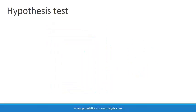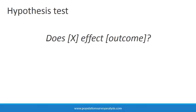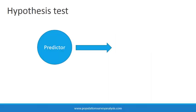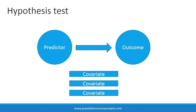Another common form of research question is a hypothesis test. Hypothesis test questions are formatted: does X affect outcome? For example, does having comprehensive HIV knowledge reduce risk of HIV infection? To answer this type of question, the researcher tests the effect of one predictor on one outcome. The term predictor is used loosely here — to predict something implies causation, and cross-sectional survey data cannot be used to determine causation of health or social outcomes.